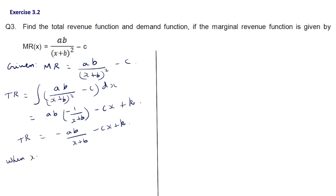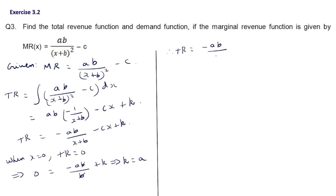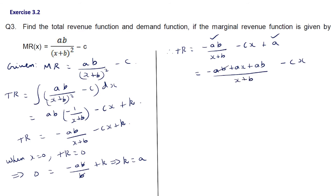When x = 0, TR = 0: 0 = -ab/b + k, so k = a. Therefore TR = -ab/(x+b) - cx + a. Simplifying the first and last terms with LCM b(x+b): ax + ab - ab = ax, giving TR = ax/(b(x+b)) - cx... wait, simplifying: a - ab/(x+b) = a(x+b-b)/(x+b) = ax/(x+b). So TR = ax/(x+b) - cx. The demand function p = TR/x = a/(x+b) - c.